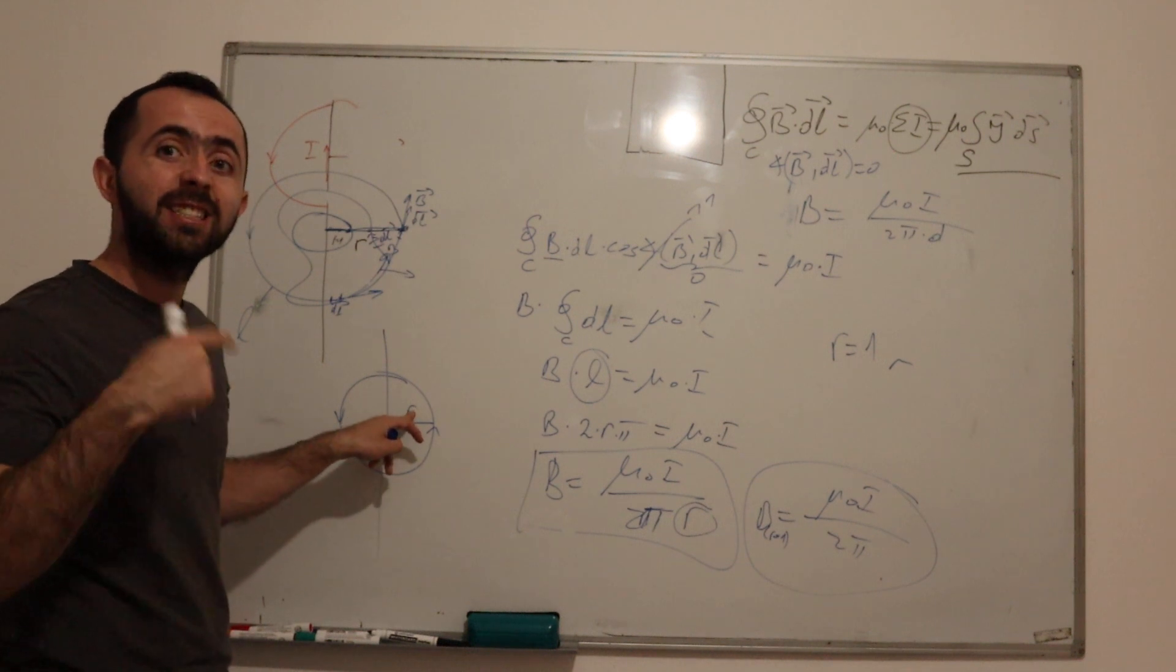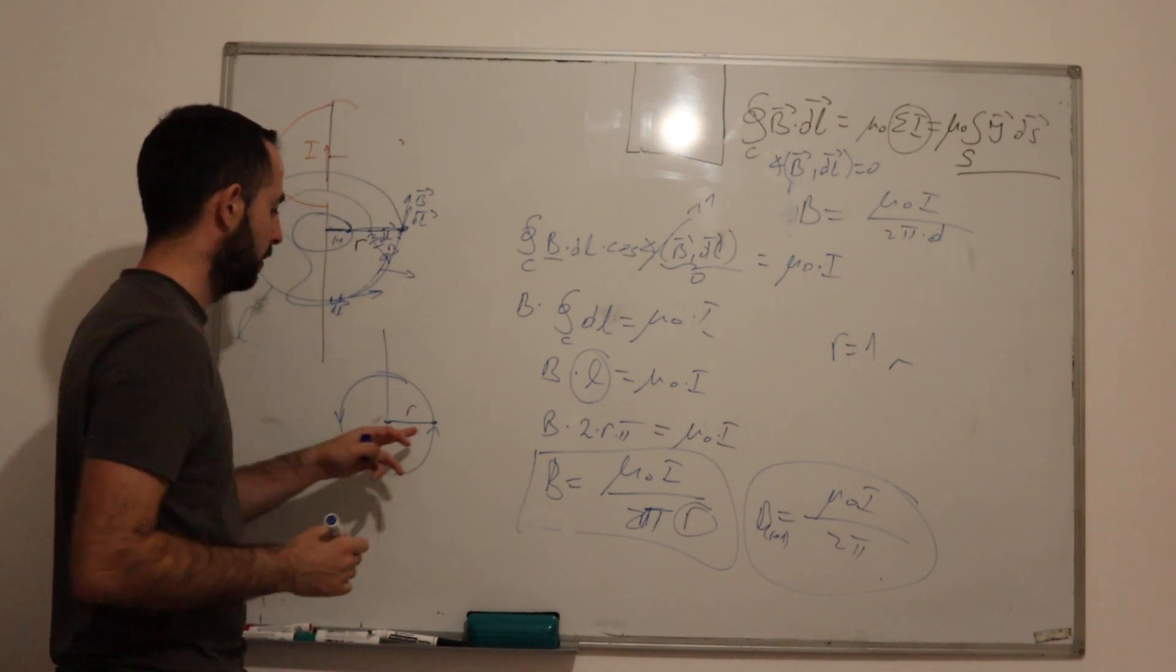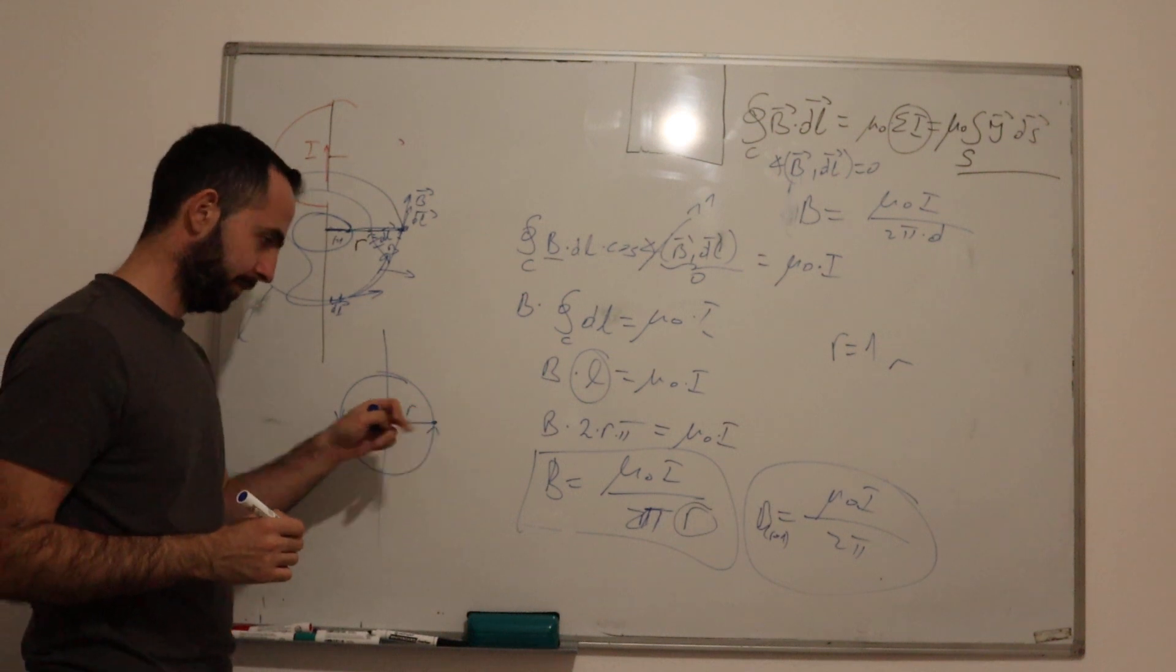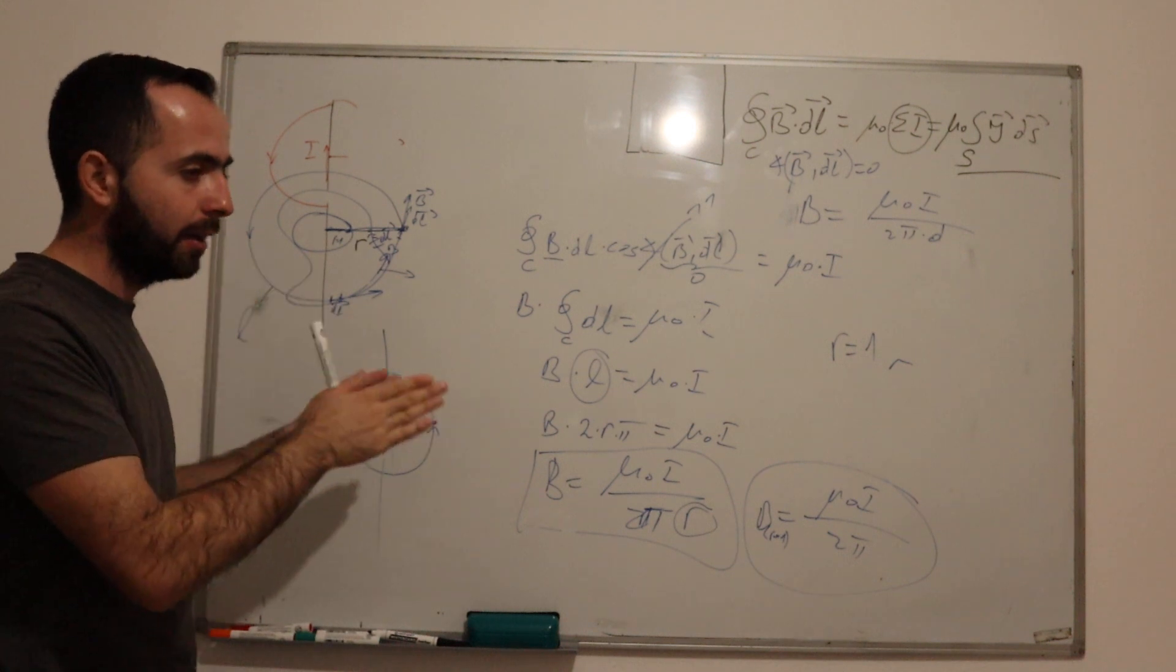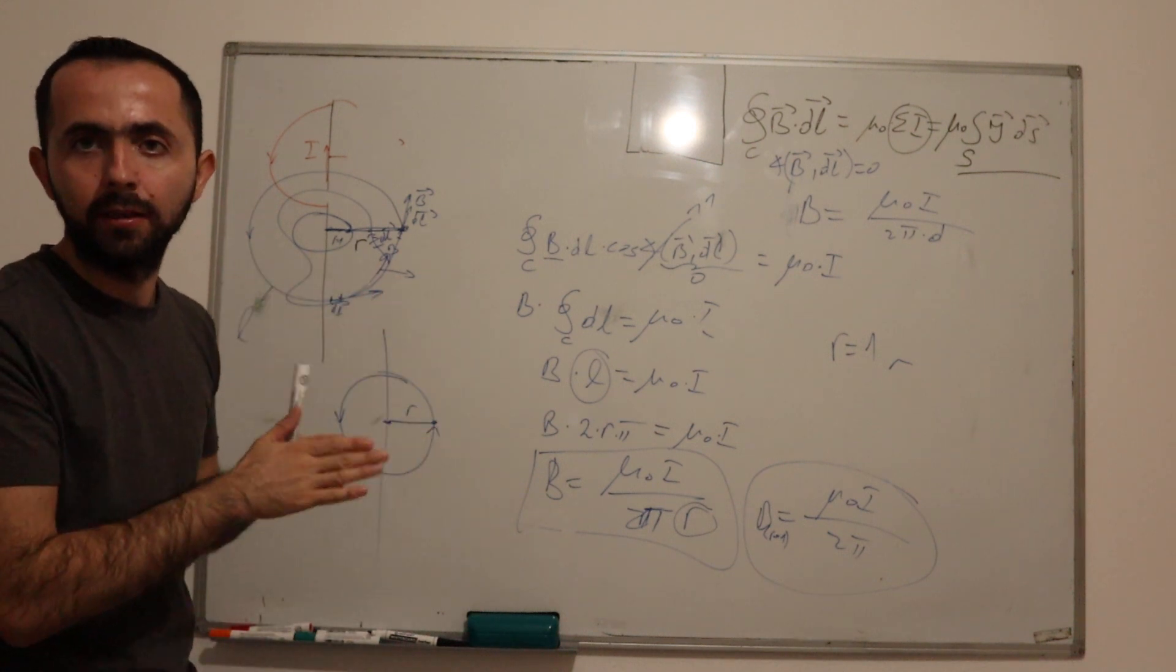which actually represents the distance of our point from the conductor, where we need to calculate our magnetic field.